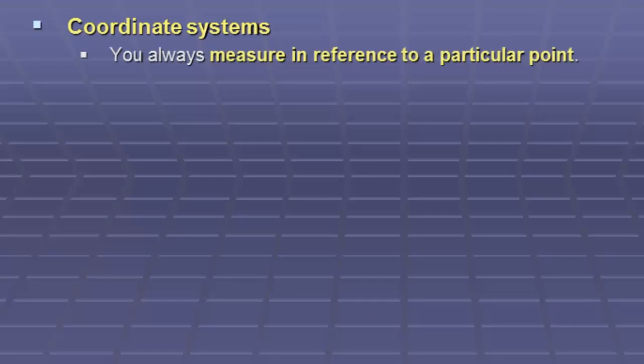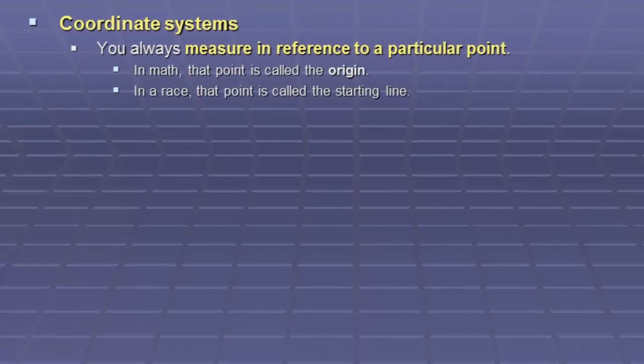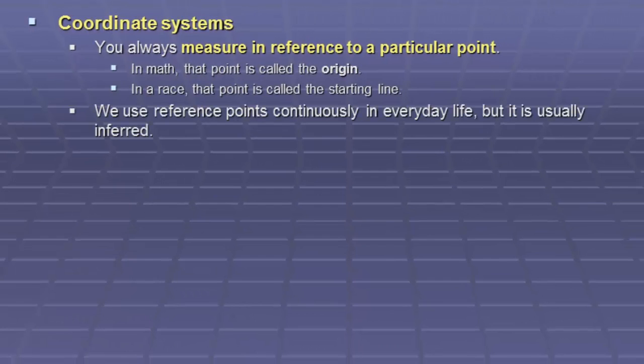We always measure in reference to a particular point. In the video, it was where the tennis ball started at. In math, that point is called the origin. In a race, that point would be called the starting line. We use reference points continuously in everyday life, but it's usually inferred.